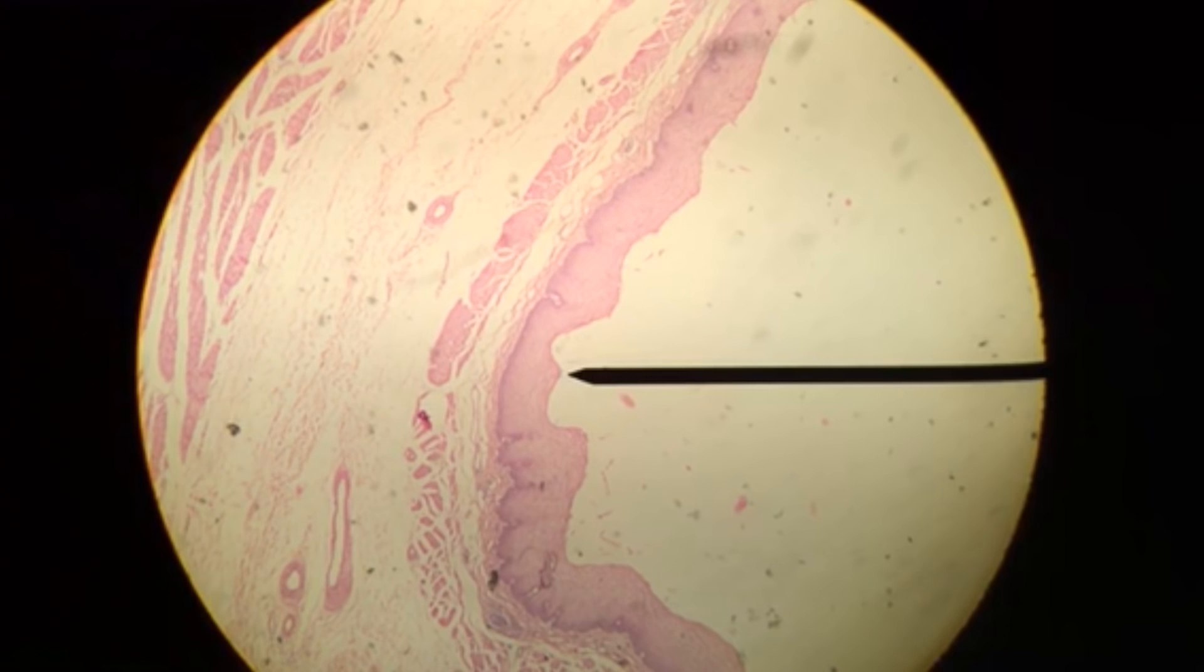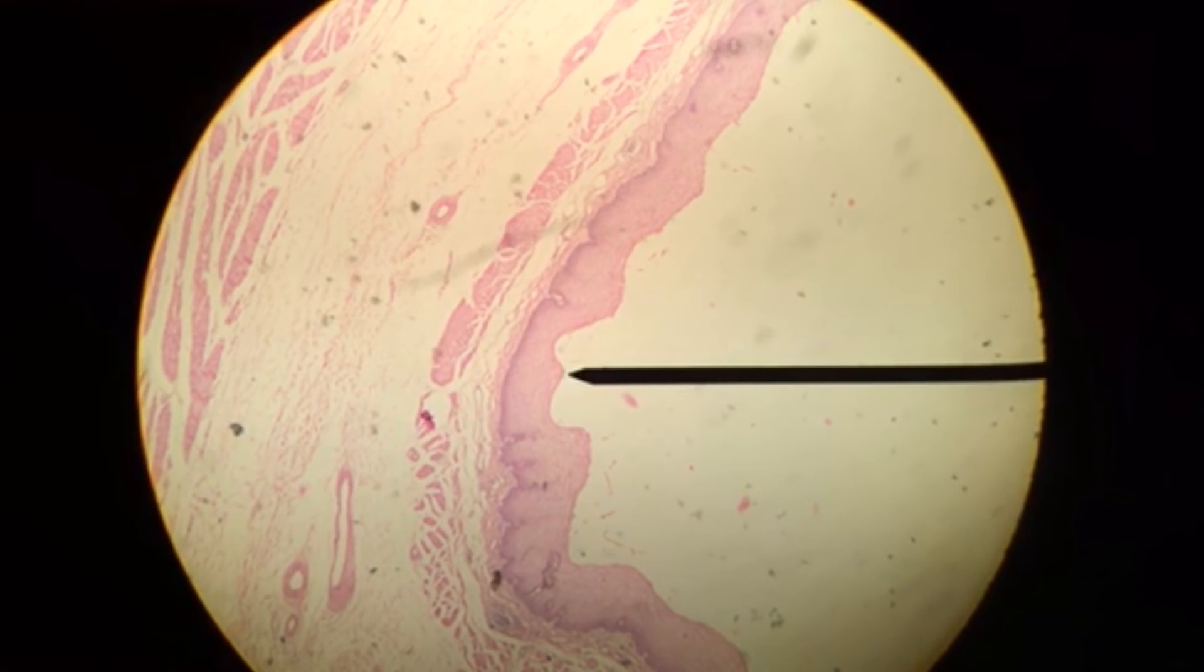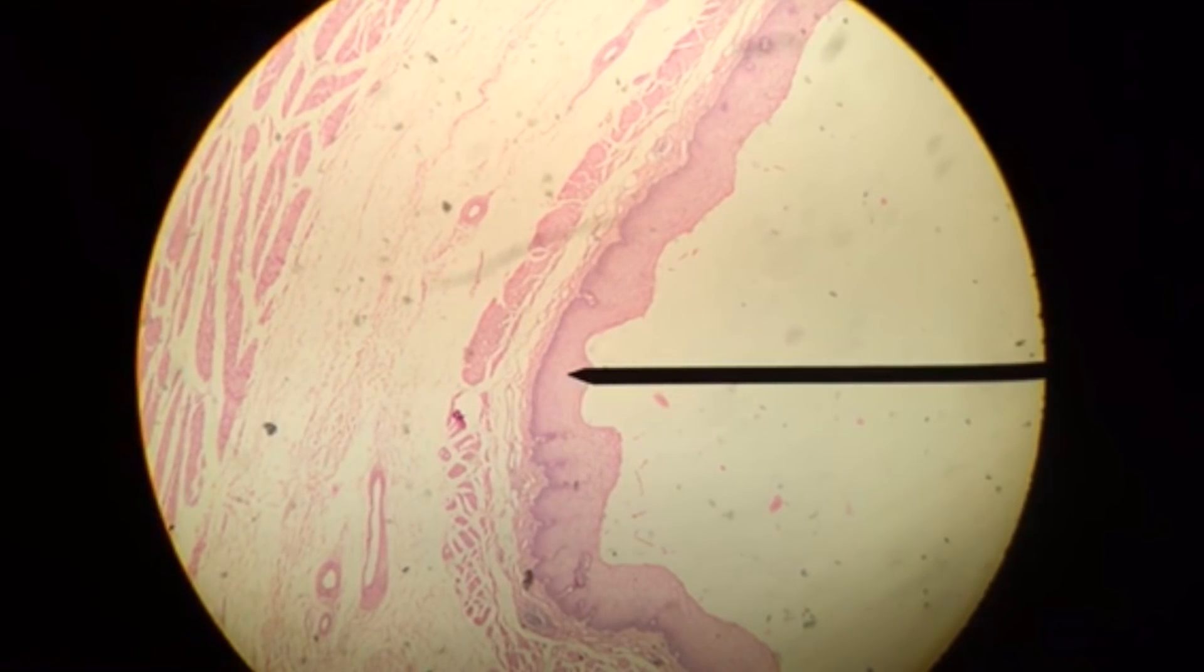This is the esophagus. We're going to work through the histology. We're going to start at the lumen, which the pointer is in now, which is the space at which the bolus of food will travel through, and work our way to the abdominal cavity.